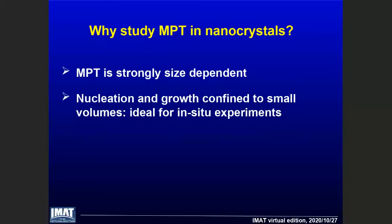Why study the martensitic phase transformation in nanocrystals? First, this transformation itself is strongly size dependent. For example, the transformation strain energy can increase as crystal size decreases, tending to stabilize the austenite and suppress the martensite. And secondly, in nanocrystals, everything of the martensite — its nucleation, its growth, its self-accommodated arrangement of variants — is confined to this very small volume, making this situation ideal for in-situ experiments.